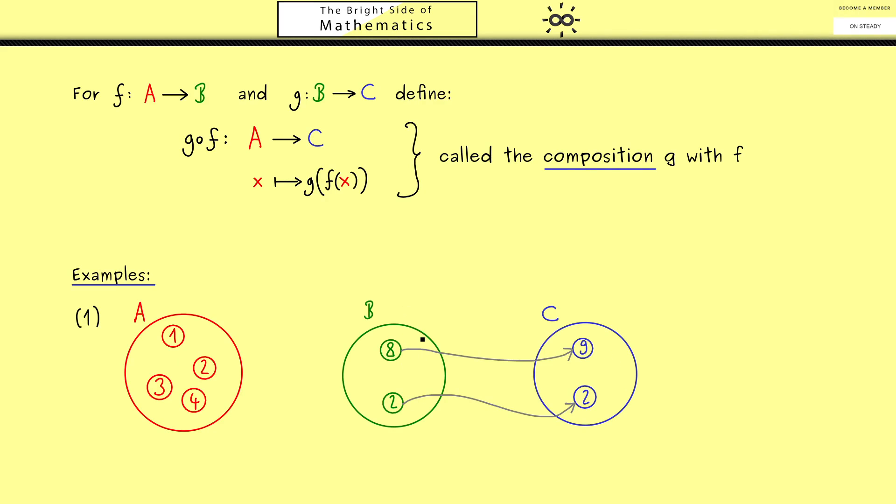Now the map g should be defined by sending 8 to 9 and 2 to 2. So with these two assignments g is completely defined. And the map f we want to define by sending any element just to 8.